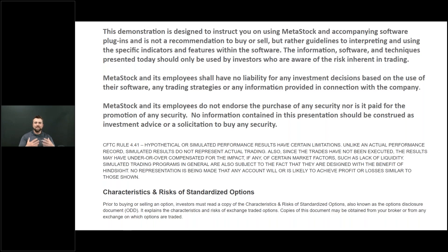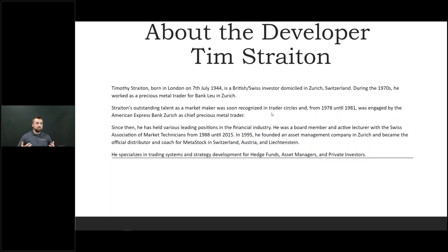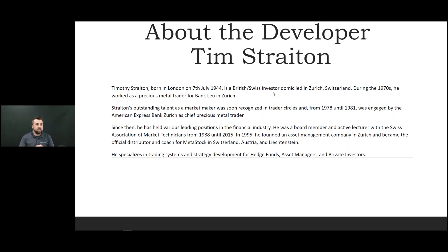So without that out of the way, we can dive into things. Elasticity 2 is a trading concept for disciplined traders, created by Tim Straten and his partners. He was born in London in 1944, and was a British-Swiss investor based in Zurich, Switzerland. During the 70s, he worked as a precious metal trader for a bank there in Zurich, and was soon recognized as a market maker in several trading circles. From 1978 until 1981, he was engaged with the American Express Bank Zurich as chief precious metals trader.